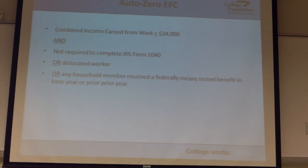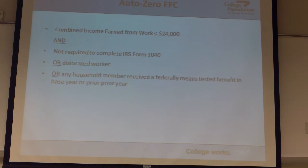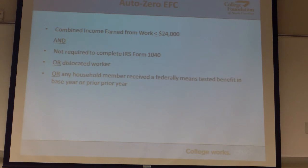The second formula that's different from the normal one is auto-zero EFC. Same concept as the simplified needs test: we've got a really low-income family, we want to ask them even fewer questions because we don't want to deter them. The percentage of people that we used to make persist all the way through who ended up having any EFC was so small that it was worth just skipping it for everybody who meets the criteria. If a family earned less than $44,000 a year, didn't have to file a Form 1040, or if they're a dislocated worker, or they received one of the benefit programs, it's not going to ask them anything — it's going to cruise them through and their EFC is automatically going to be zero, no matter what's gone in those other boxes.